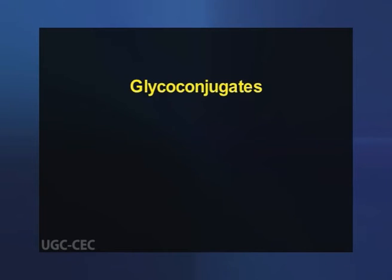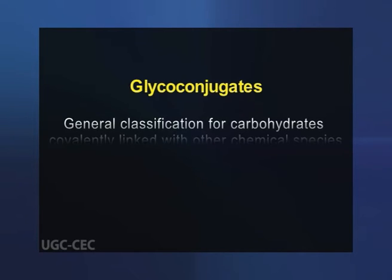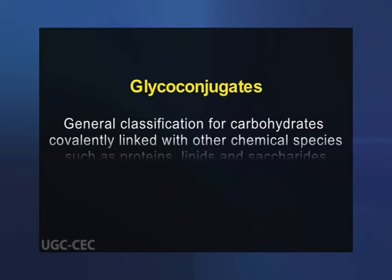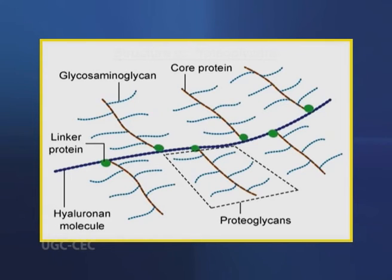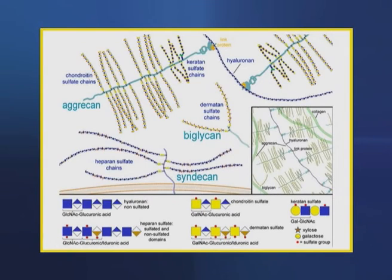Now let's have a detailed account of glycoconjugates. Glycoconjugates is the general classification for carbohydrates covalently linked with other chemical species such as proteins, lipids and saccharides. Glycoconjugates are formed in a process termed glycosylation. Proteoglycans and glycoconjugates are macromolecules of the cell surface or extracellular matrix in which one or more glycosaminoglycan chains are joined covalently to a membrane protein or a secreted protein.